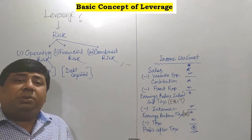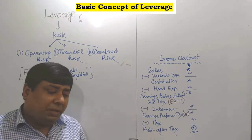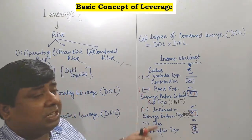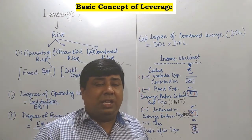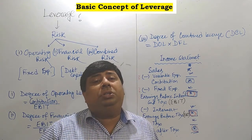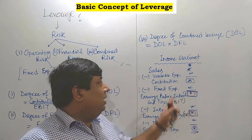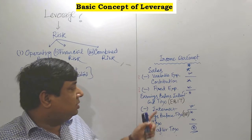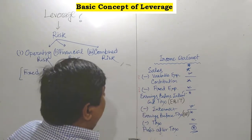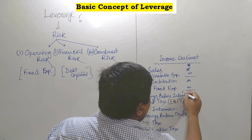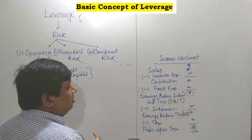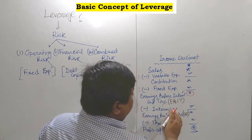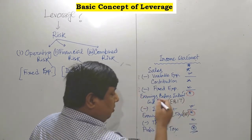The origin of the income statement is sales. From sales, first we deduct all operating expenses or variable expenses, and then fixed cost or fixed expenses — sometimes called static expenses — which are not directly proportionate to the sales volume. After deducting these two, the balance remaining is known as EBIT. From EBIT, once we deduct interest, the balance is EBT (earnings before tax). Once we deduct tax, the balance remaining is known as PAT, or profit after tax.